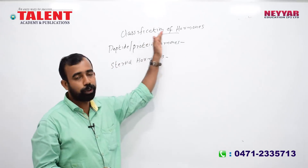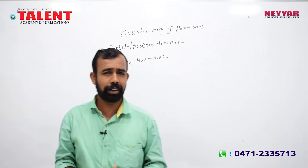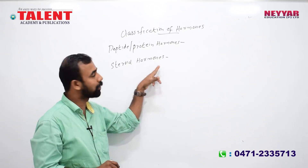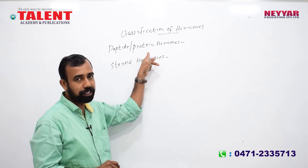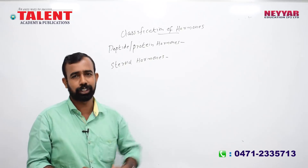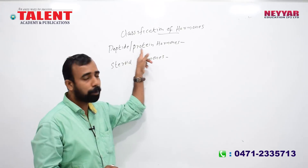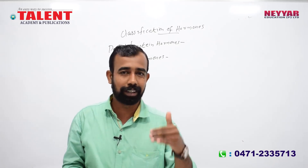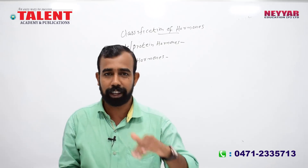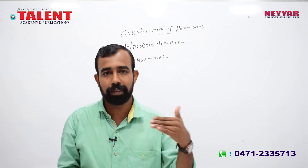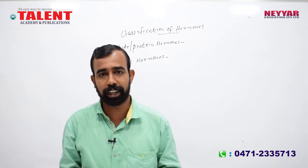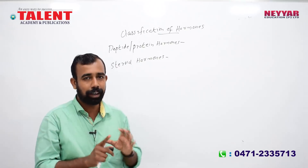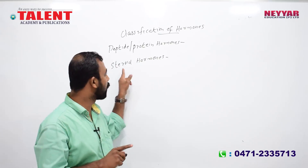This is the classification of hormones. Hormones are of different classes. There are two main classes: peptide/protein hormones and steroid hormones. Examples of peptide hormones include insulin, vasopressin, oxytocin, and somatotropin. These are the peptide hormones, while steroid hormones form the second group.